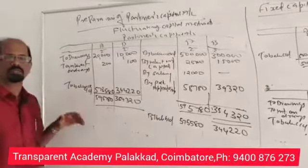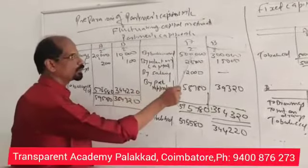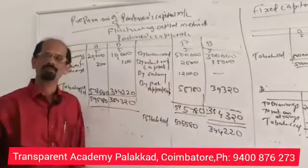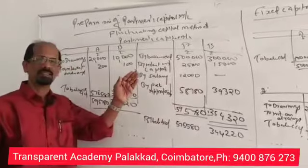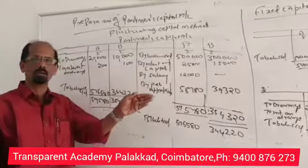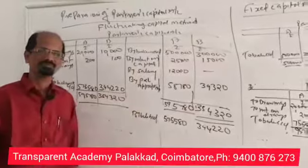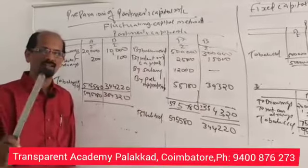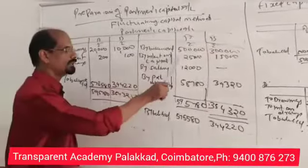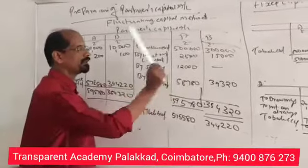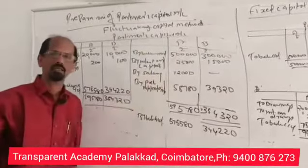If you are an existing business, opening balance is entered as 'By Balance b/d' — 5 lakhs and 3 lakhs. To credit the capital account, one entry is Interest on Capital. The capital account is credited with interest on capital.